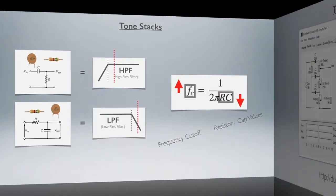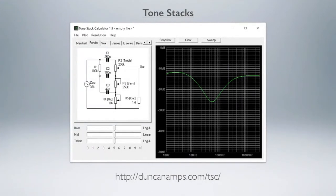Let's see an example of this. This is a great little program - the tone stack calculator. You can find it at duncanamps.com/tsc. What it does is show you the frequency response of all these different types of tone stack circuits. You can go from tab to tab between the Marshall, Fender, Vox, and some other circuits as well.